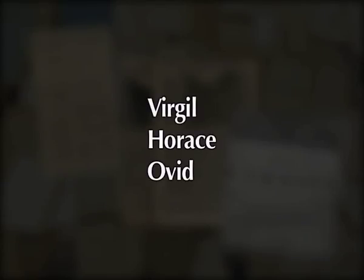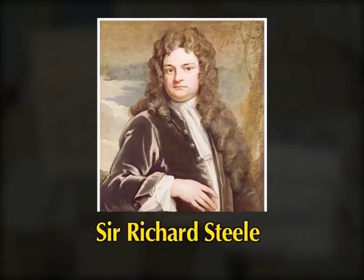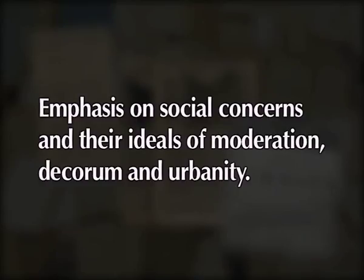Periodical essays is one of the most important literary features of English literature. The Augustan age was a brilliant literary period with artists such as Virgil, Horace and Ovid under the Roman emperor Augustus. In the 18th century, Joseph Addison and Sir Richard Steele's Tatler and Spectator, with their many successors, gave to the essay written in prose a standard modern vehicle with the emphasis on social concerns and their ideals of moderation, decorum and urbanity. In today's class we shall discuss the history of periodical essay in the Augustan age and its social perspective.